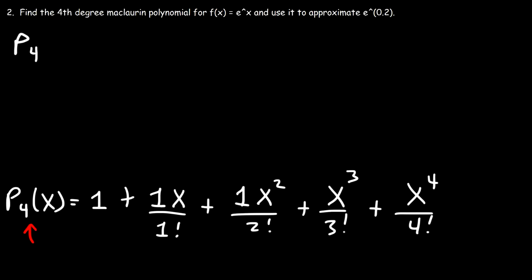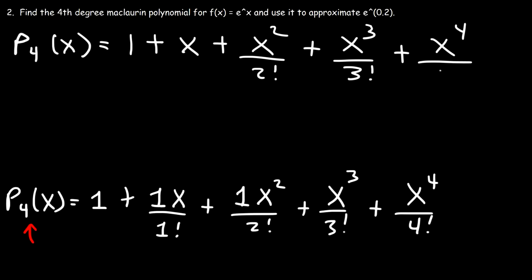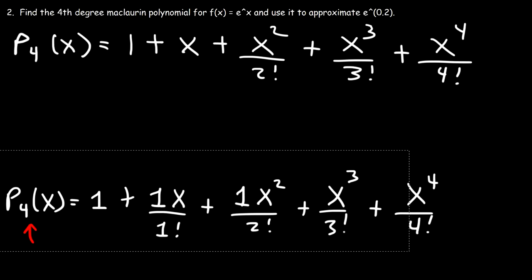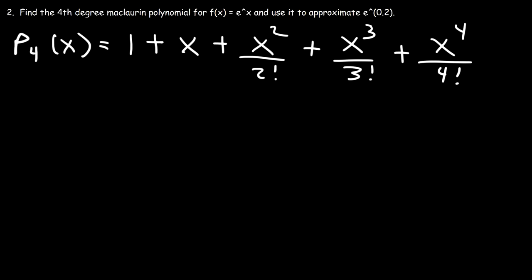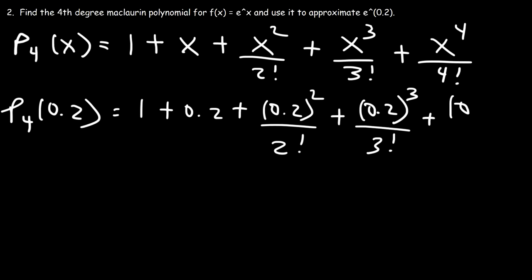Rewriting this expression, the fourth degree Maclaurin polynomial is 1 + x + x²/2! + x³/3! + x⁴/4!. Now let's use it to approximate e^0.2. Plugging in x = 0.2: 1 + 0.2 + (0.2)²/2! + (0.2)³/3! + (0.2)⁴/4!.